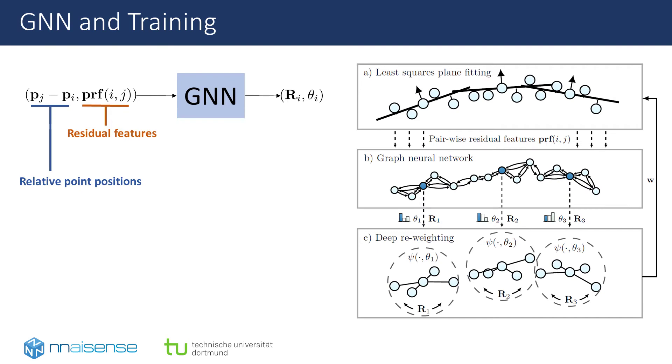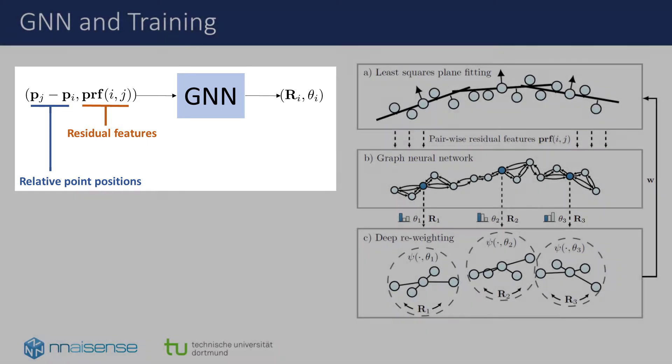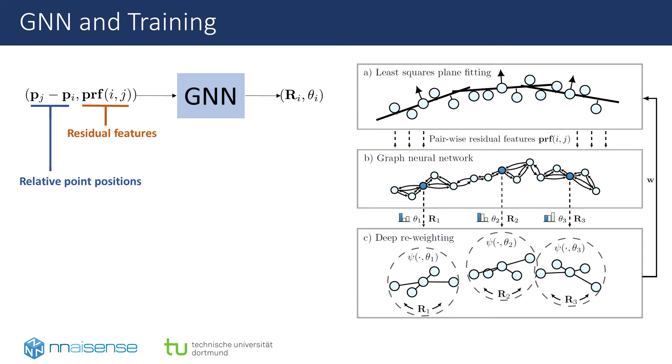We propose to interpret the input point cloud as a neighborhood graph and use a graph neural network. The network receives residual features from a previous least squares solution and the relative point positions as edge input features. It regresses R and theta as node features for each node. The rotation R is obtained by regressing a four-dimensional vector, normalizing it, and interpreting it as a unit quaternion.